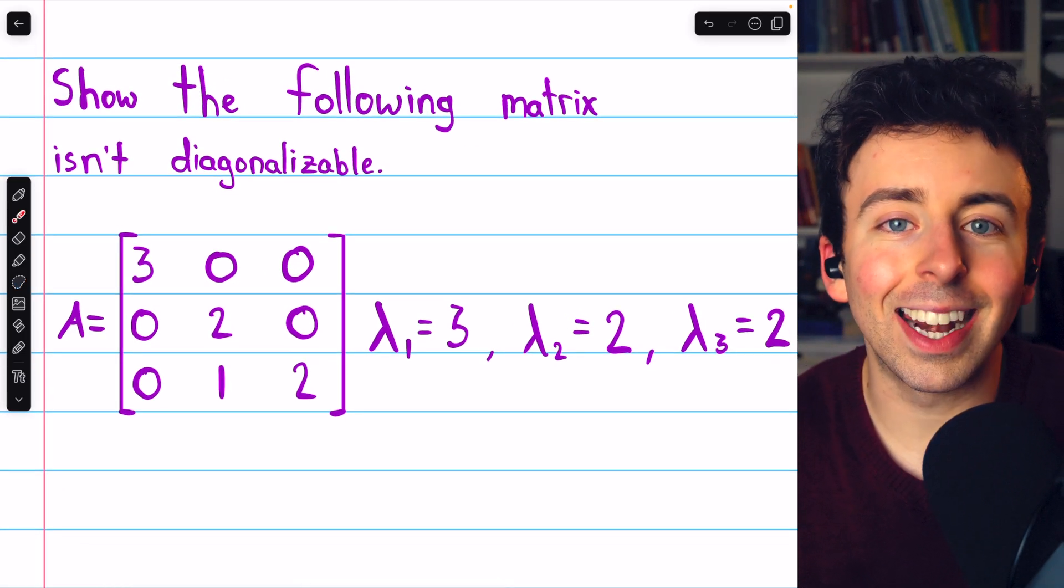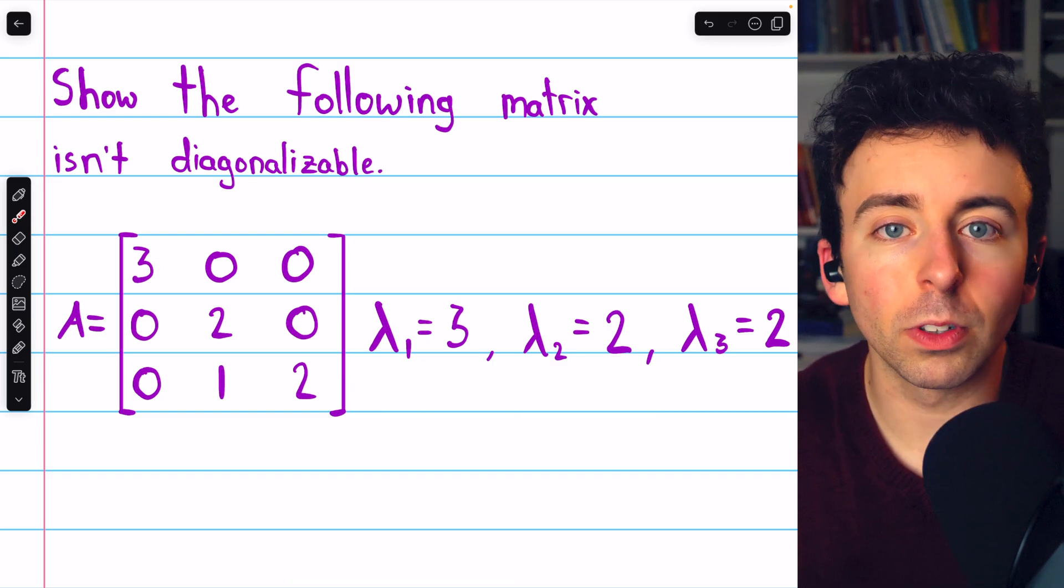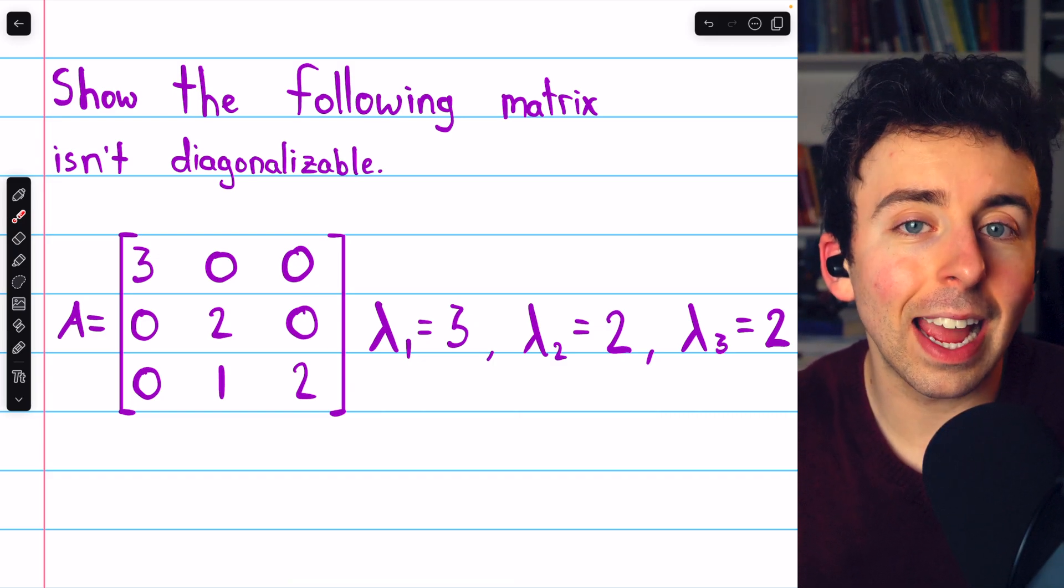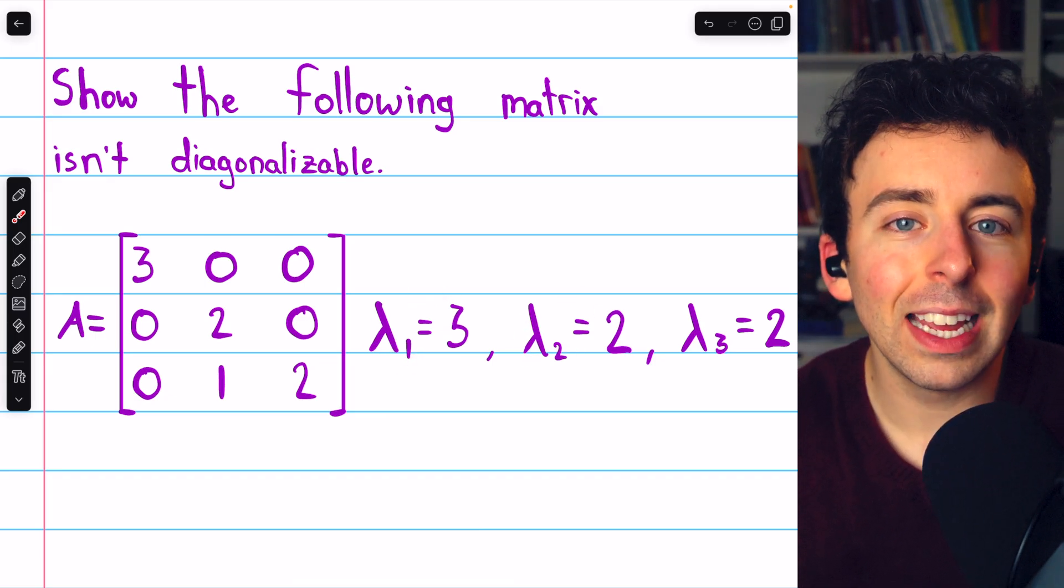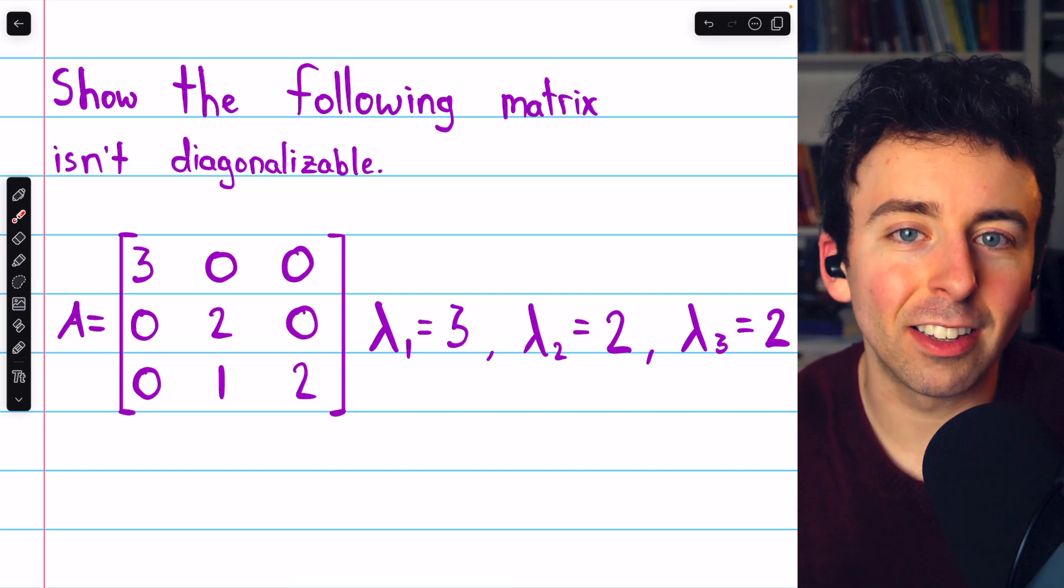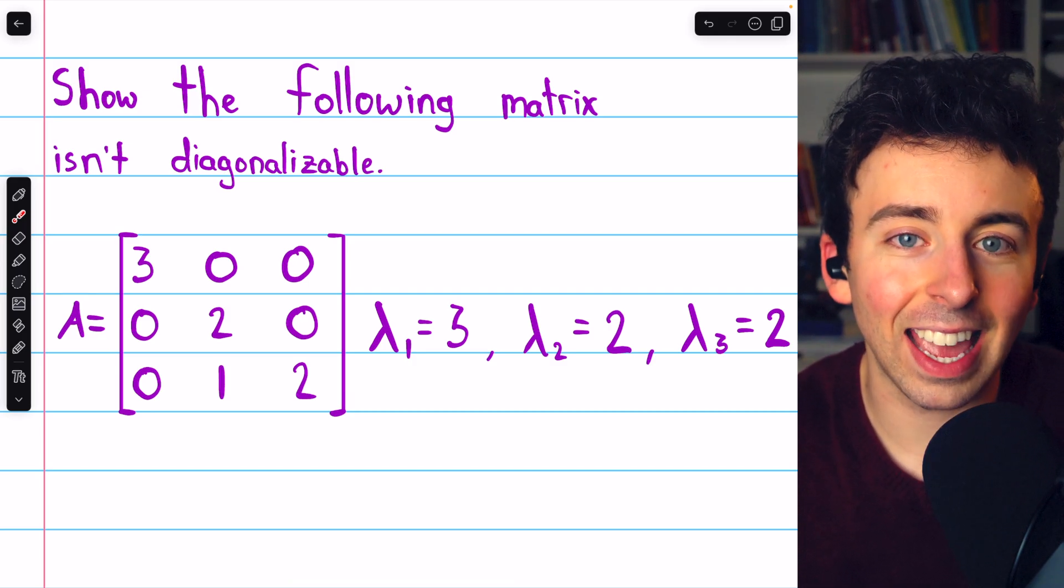If this matrix had three distinct eigenvalues, it would have to have three linearly independent eigenvectors and hence would be diagonalizable. Since it only has two eigenvalues, it's possible that it's diagonalizable, but we have to do more work to determine whether or not that's the case.